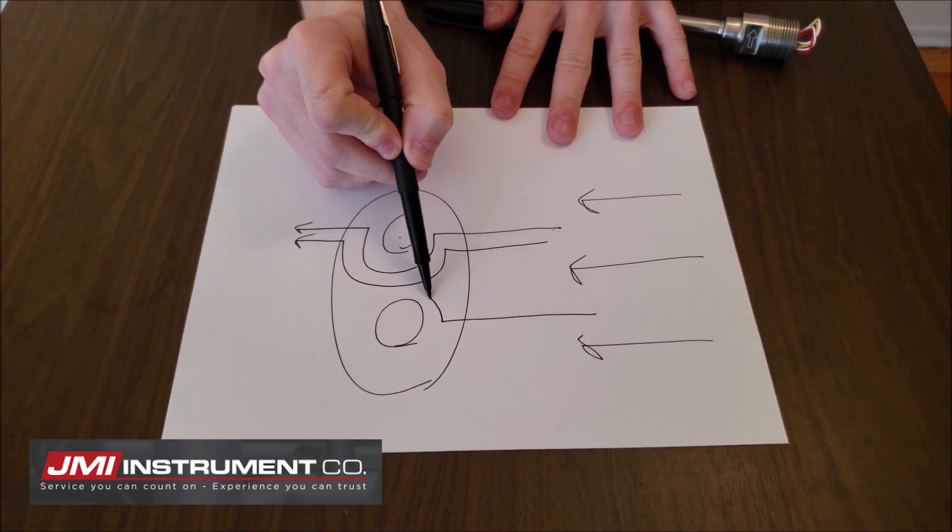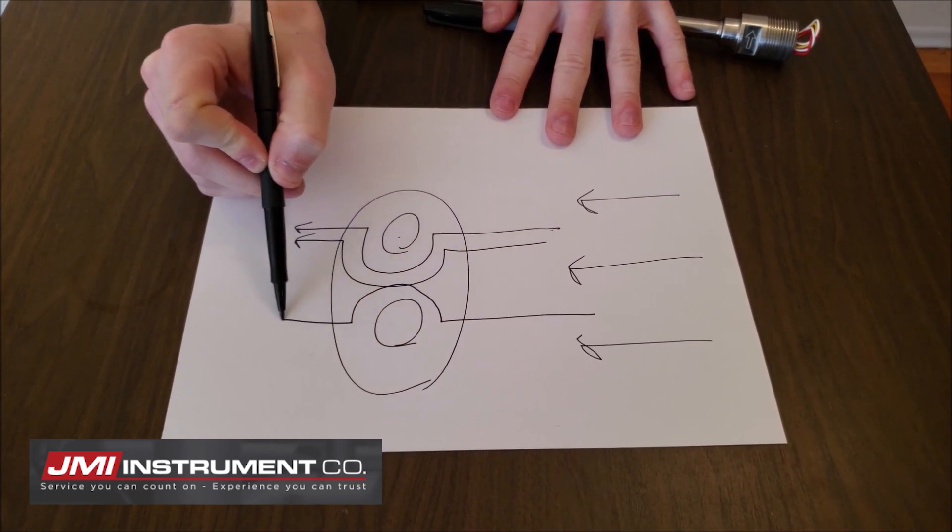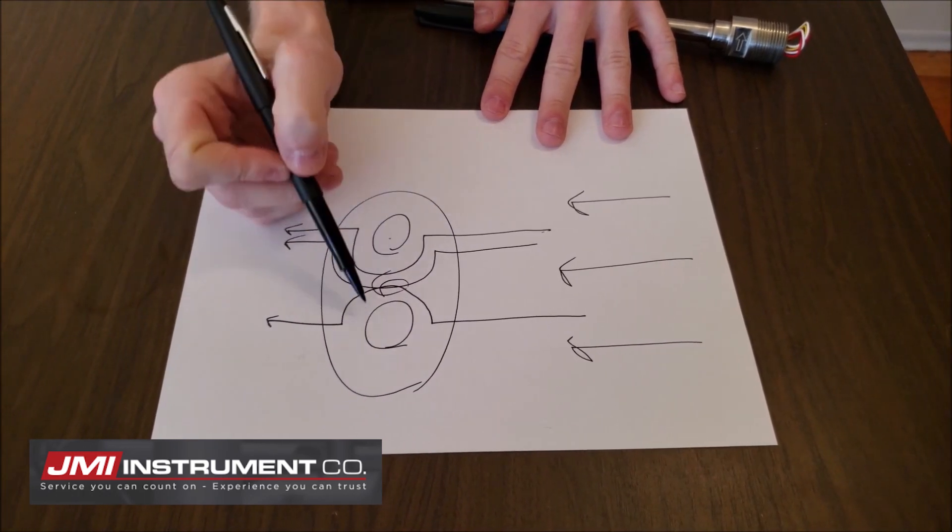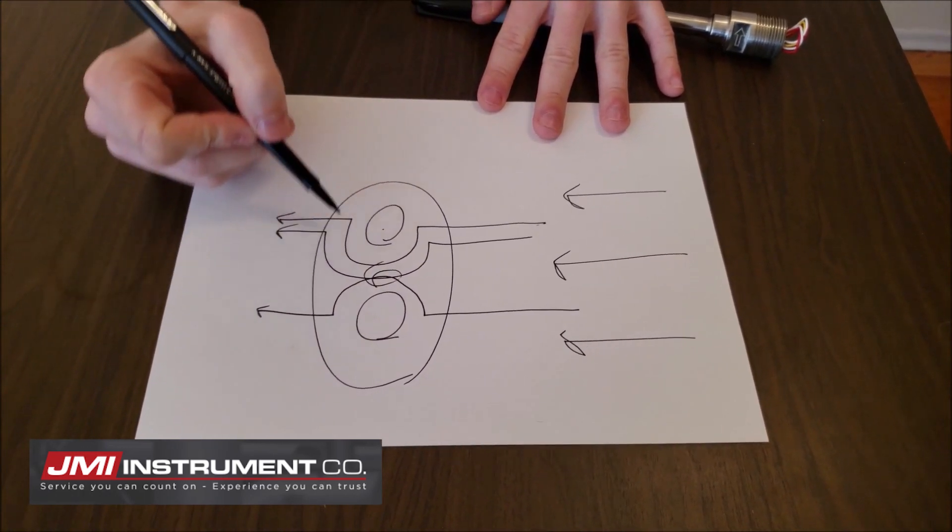This one is going to curve and hit the airflow of the other sensing element. These are going to interfere with each other.